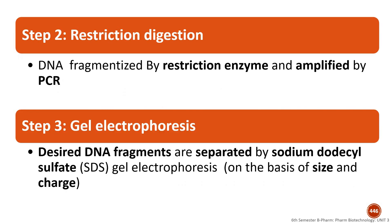The second step is restriction digestion. If required, we also perform polymerase chain reaction to amplify the extracted DNA. The third step is gel electrophoresis, where oppositely charged molecules are separated using a gel and an electric field. Oppositely charged molecules attract toward electrodes, enabling separation based on their charge and size.